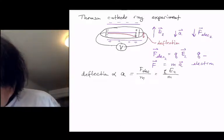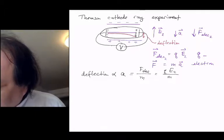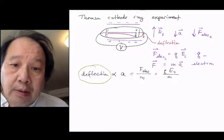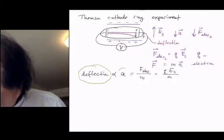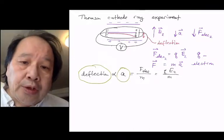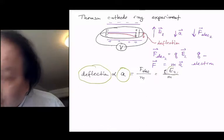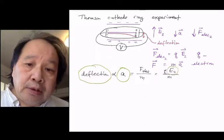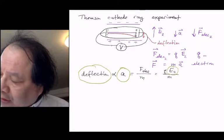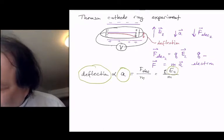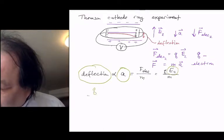Thomson knew the deflection. He therefore, because he did it in many different ways, knew the acceleration. Being a good physicist, he knew what electric field he had made. So having determined the acceleration and the electric field, he was able to determine q over m.